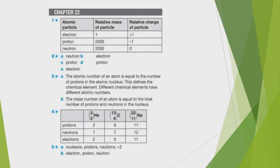Practice questions — copy and complete the table: Atomic particles, relative mass, relative charge. Electron: relative mass ≈ 1/2000 (negligible), relative charge −1. Proton: relative mass 2000 (approximately 1), relative charge +1. Neutron: relative mass 2000 (approximately 1), relative charge 0.